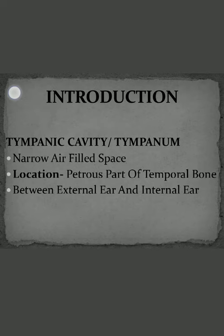In the previous lecture, I showed you the temporal bone and where it is located in the skull. There are different parts of the temporal bone. The petrous part is one portion of the temporal bone — a hard, dense portion located on the inside of the skull bone. In that petrous part, the tympanic cavity is located. This cavity is located between the external ear and the internal ear, and that is why it is named the middle ear.